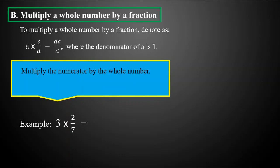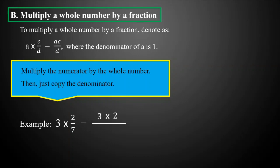To multiply a whole number by a fraction, simply multiply the numerator by the whole number. Our numerator is two and our whole number is three, so we multiply three times two, then copy the denominator which is seven. Three times two equals six, and we copy the denominator seven. So three times two-sevenths equals six-sevenths.